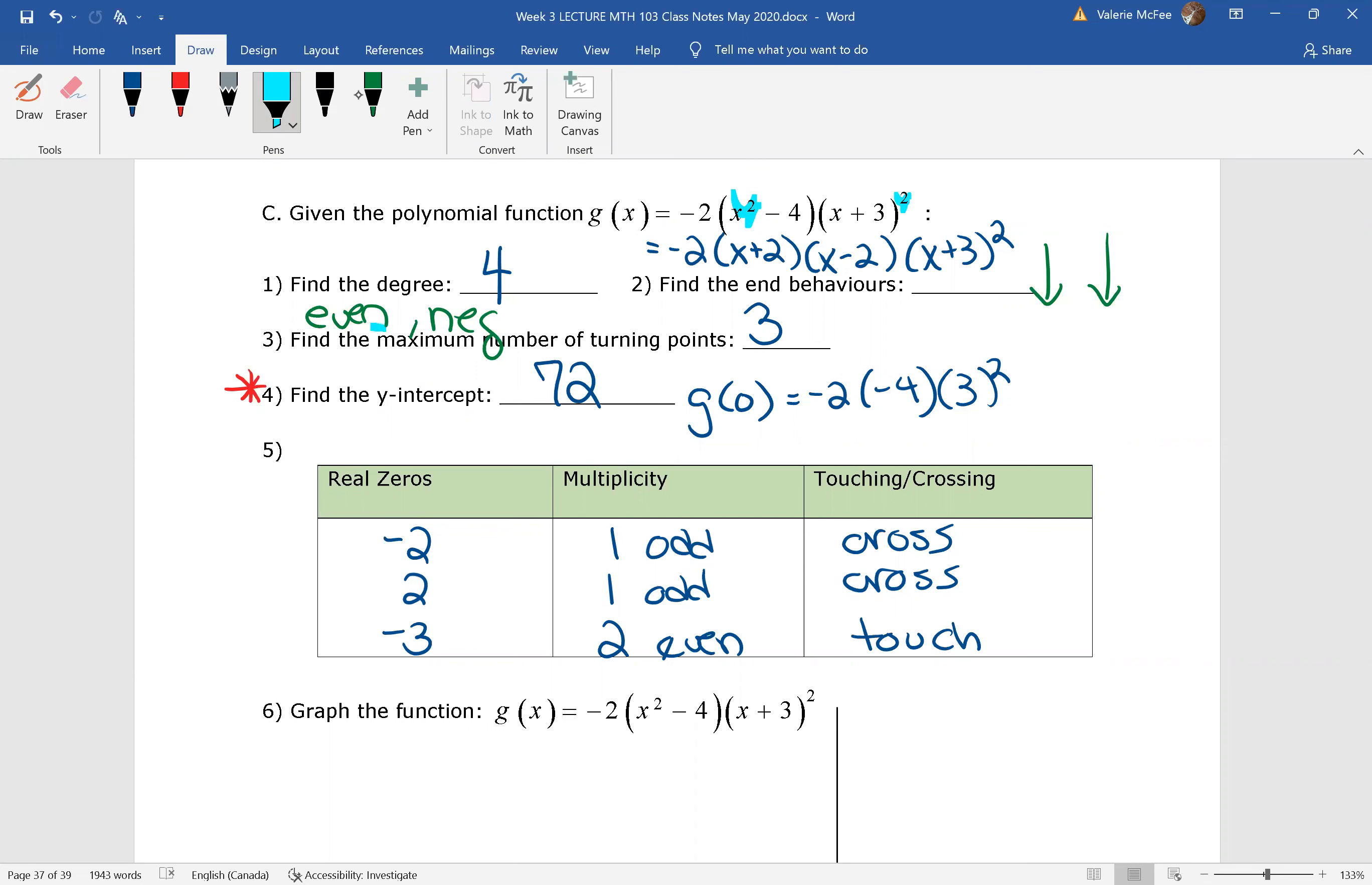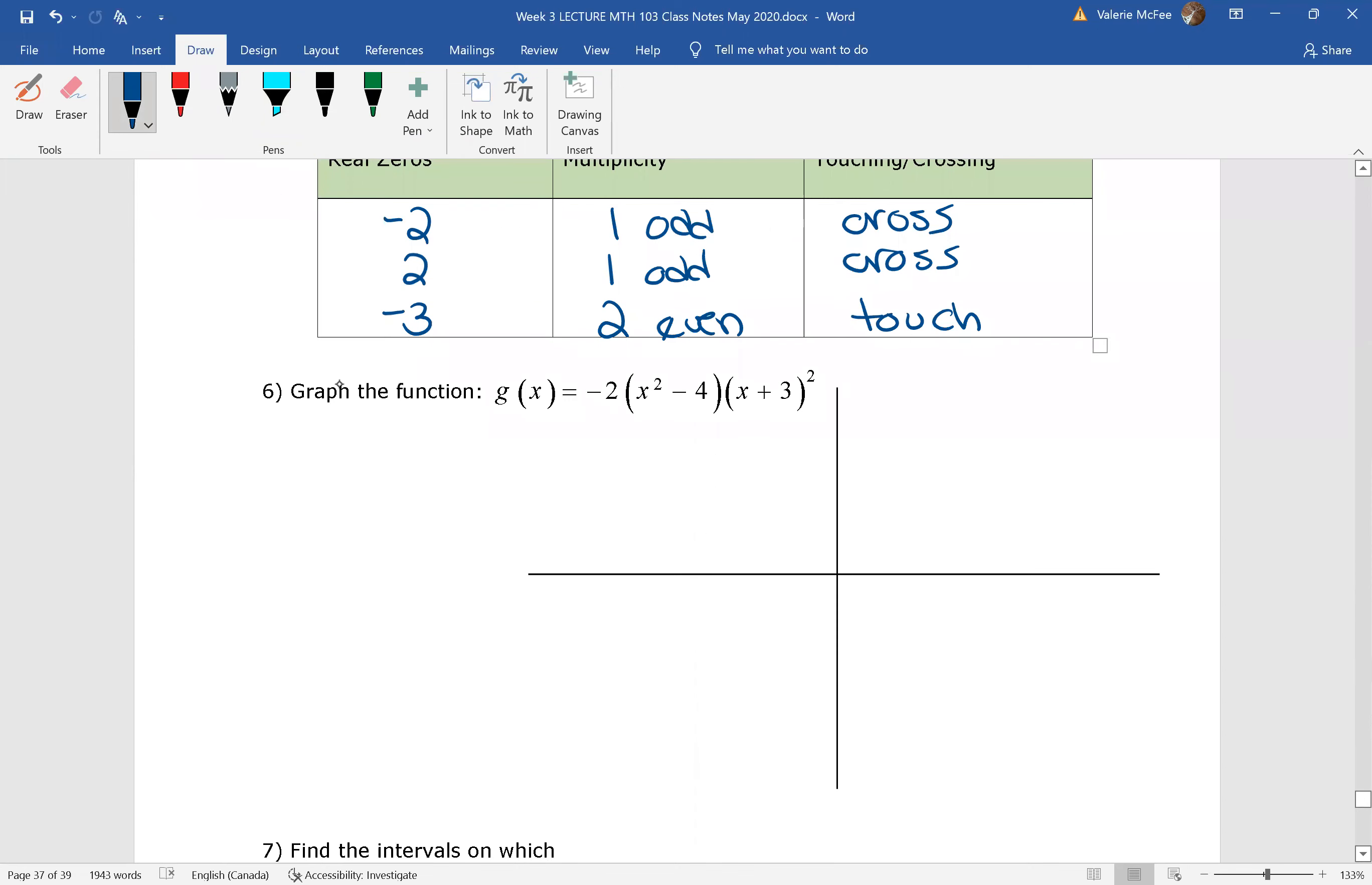This was a degree that's even with a negative leading coefficient, so both ends are falling. And then, did you find the y-intercept is 72? If you let g of 0 give you all of your zeros for x, you would have found that this is a positive 72. And that's actually an important point when we're checking the function graph here. We know that it has to have this y-intercept at 72.